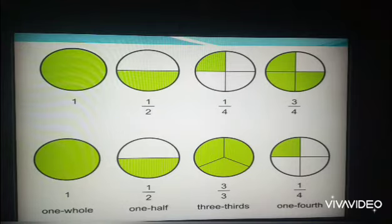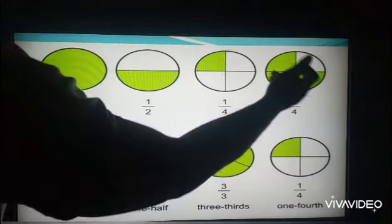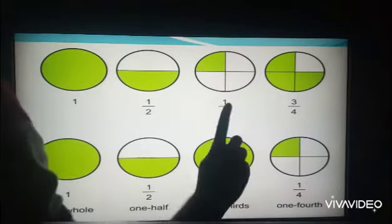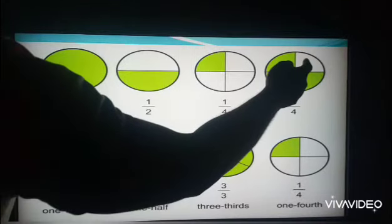So here you realize that this is three over four because we have shaded three and we've left one. But how many sections are there? There are four sections: one, two, three, four.